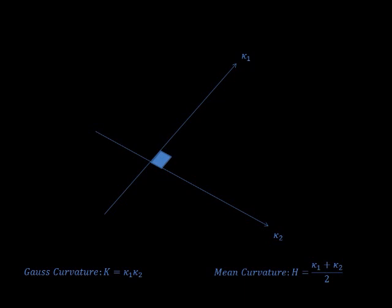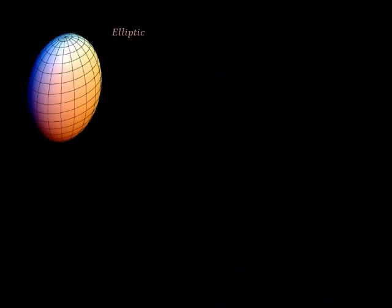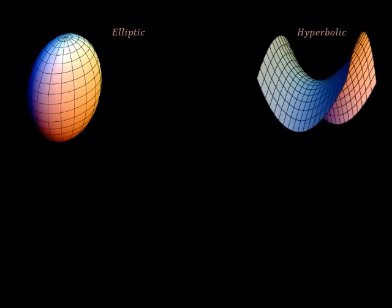If we take the Gauss curvature and the mean curvature, we can see certain properties of the surface for a given point. If the Gauss curvature is greater than 0, it is elliptic, which geometrically looks like the two curvatures are going away from you. If the Gauss curvature is less than 0, it is hyperbolic, which looks like a saddle, where one curvature comes towards you the other away.